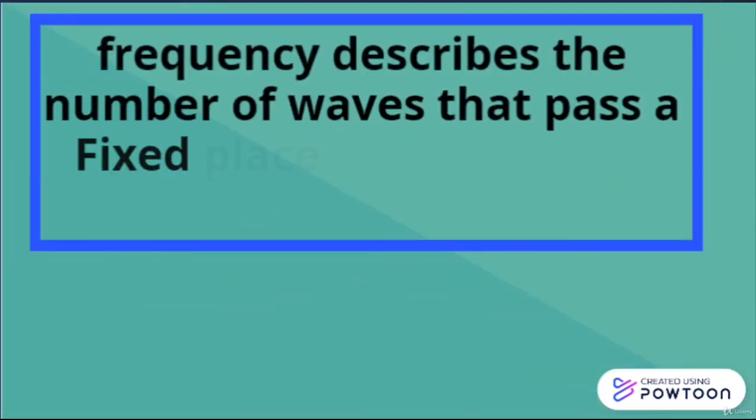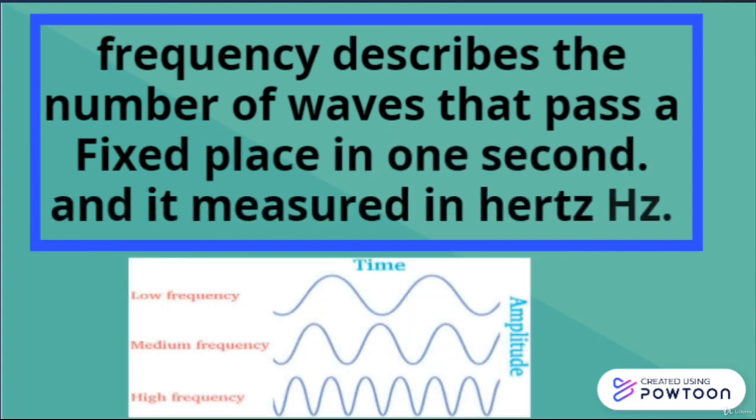Frequency describes the number of waves that pass a fixed place in one second, and it measured in Hertz. As you see in the image, the low frequency means that there is a low number of waves in one second.